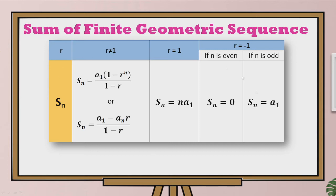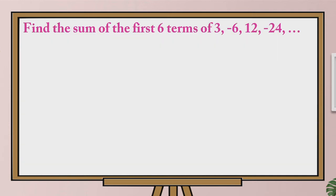To illustrate how to use the formulas in the table, we will have some examples. The first example will be to find the sum of the first six terms of the geometric sequence 3, negative 6, 12, negative 24, and so on.